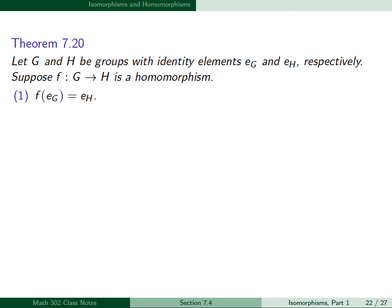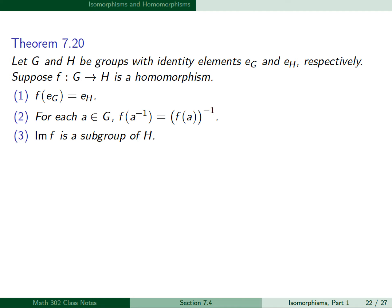Theorem 7.20: Let G and H be groups with identity elements e_G and e_H respectively, and suppose f from G to H is a homomorphism. Then: (1) f(e_G) = e_H; (2) for each element a in G, f(a⁻¹) = f(a)⁻¹; (3) the image of f is a subgroup of H; and (4) if f is injective, then G is isomorphic to the image of f.